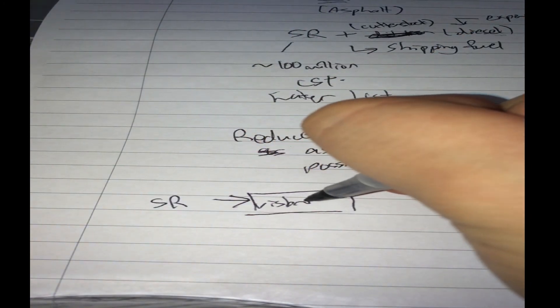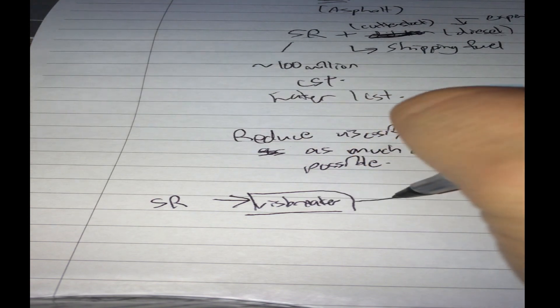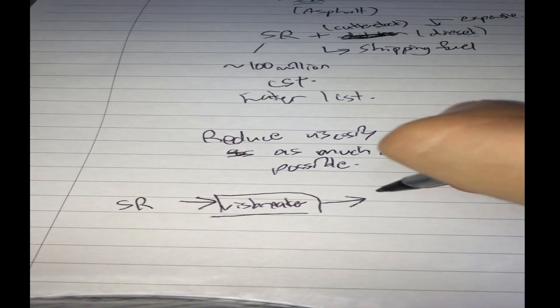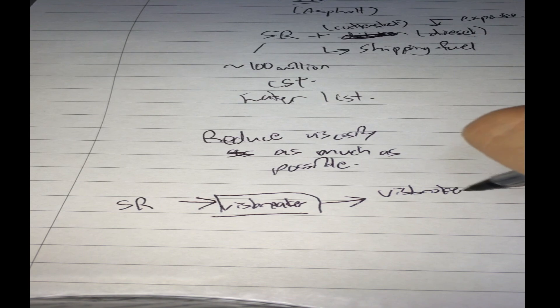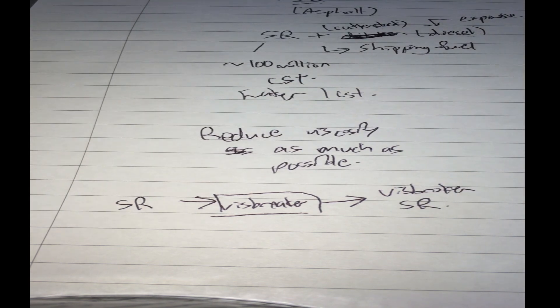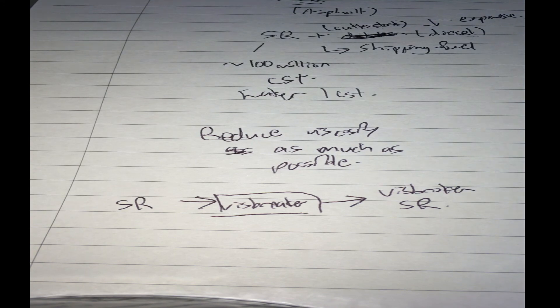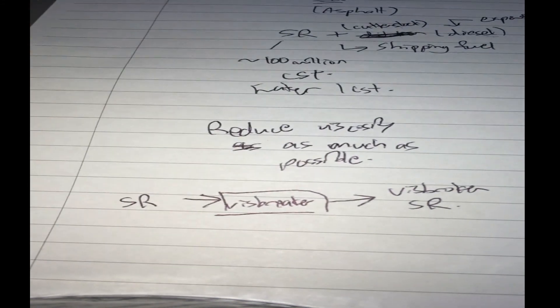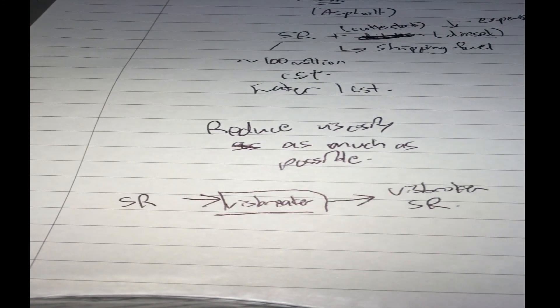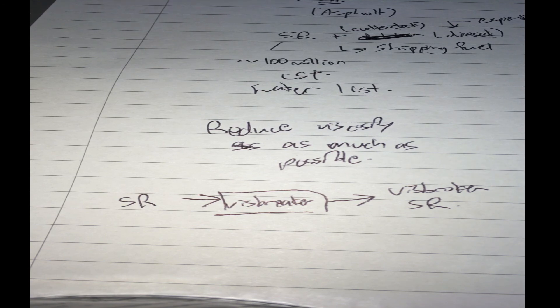And how can you reduce it? You can send it into what is known as a visbreaker. Visbreaker is basically the breaking of viscosity. You can think of it like that - it's to reduce the viscosity of this short residue so that you can dilute with less cutter stock.